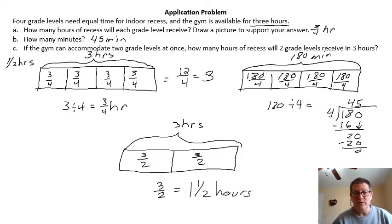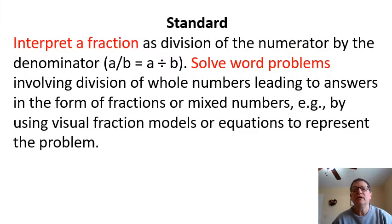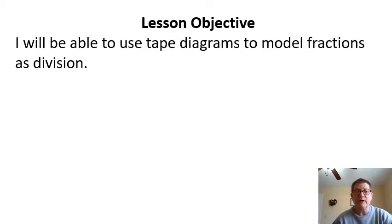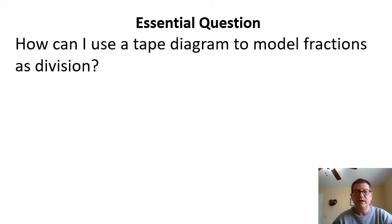As you can see, we were able to solve all three of those with a tape diagram. For the one for minutes, we just had to convert how many hours were to minutes to use the same tape diagram. Once we wrote it as a fraction, it gave us our answer. The standard is interpret a fraction as division, numerator by the denominator, a over b equals a divided by b. We're going to solve word problems involved in division of whole numbers leading to answers in the form of fractions or mixed numbers using visual fraction models or equations. Our essential question: how can I use the tape diagram to model fractions as division?